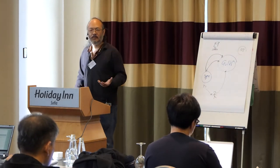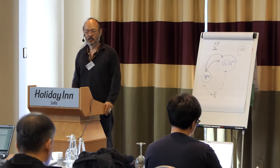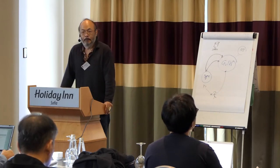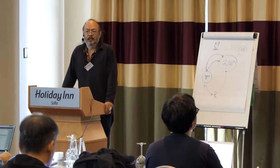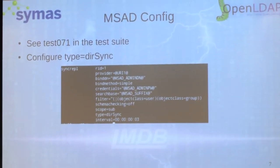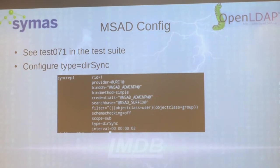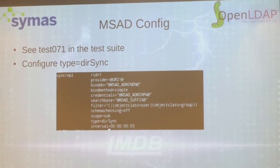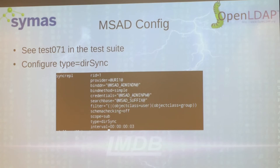The configuration is much the same as the standard SyncREPL client, but instead of saying refresh-only or refresh-and-persist, you simply say the replication type is equal to dirsync. With Microsoft, we couldn't actually get persistent search to work. They have something called persistent search, but it doesn't operate when you send it the dirsync control — so it's useless. This really runs only in refresh mode.